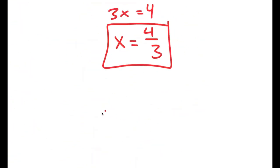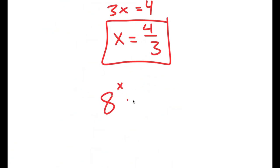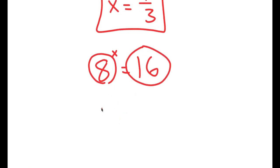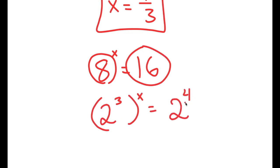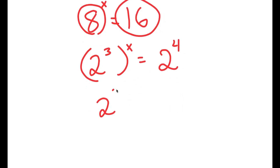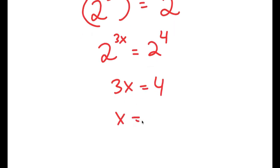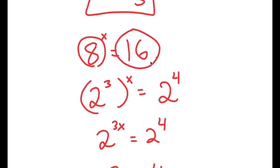There is another, simpler way to solve this. At the start, rewrite both sides in base 2: 8 is 2 to the power of 3, so I get 2 to the power of 3x. And 16 is 2 to the power of 4. So 2 to the power of 3x equals 2 to the power of 4, meaning 3x equals 4, and x equals 4 over 3. This is a much simpler method.